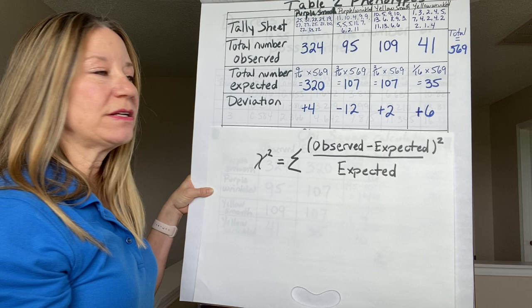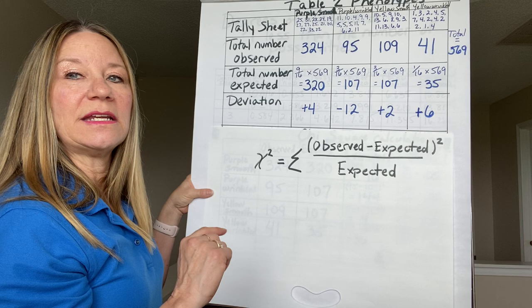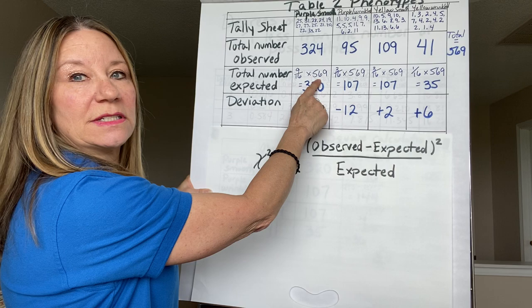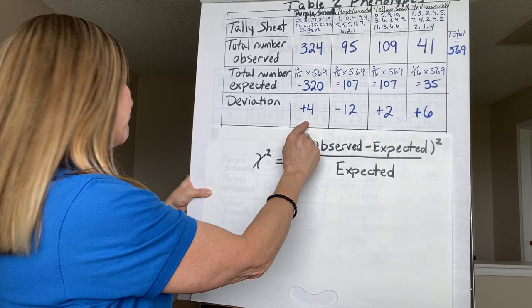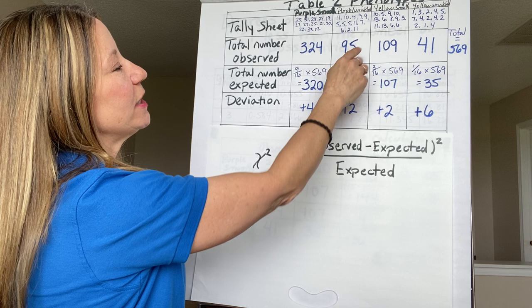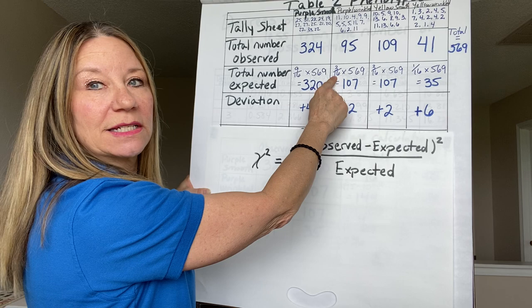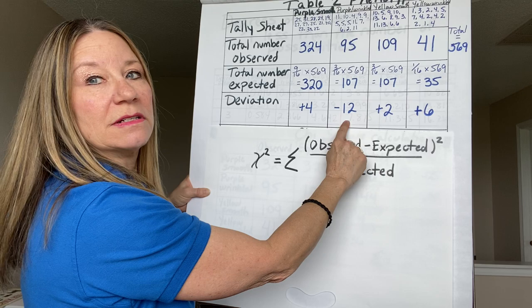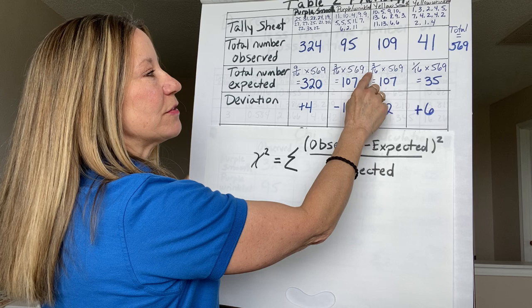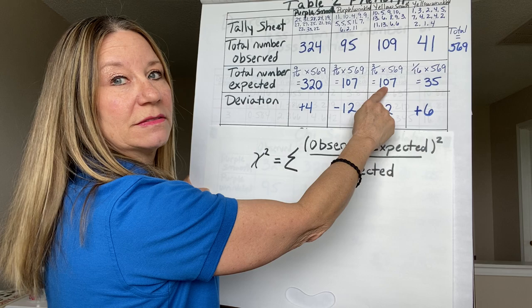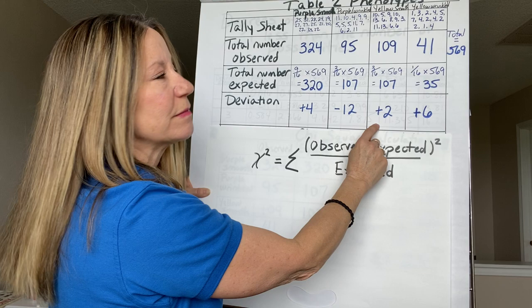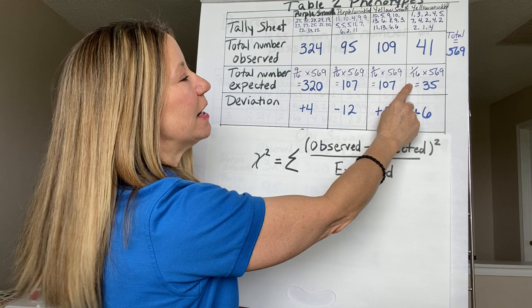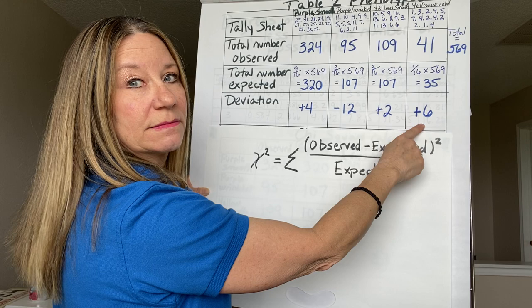How many should I have expected to get out of 569? Going back to my original genetics: 9/16 of 569 is 320 — a difference of 4. For purple and wrinkled, 3/16 of 569 is 107; observed was 95, a difference of negative 12. For yellow and smooth, 3/16 of 569 is 107; observed was 109, a difference of 2. For yellow and wrinkled, 1/16 of 569 is 35; observed was 41, a difference of 6.